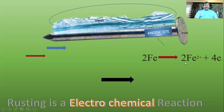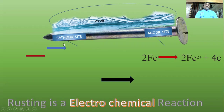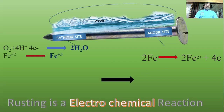The ferrous ions are positively charged and move to another place which acts as a cathodic site — like a cathode, which attracts positively charged particles. At the cathodic site, the ferrous ions lose further electrons and become ferric ions.